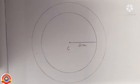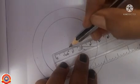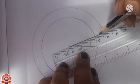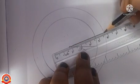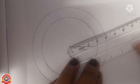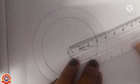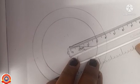We will get a circle. Mark its radius. See, what's the length of this radius? Yes — four centimeters.